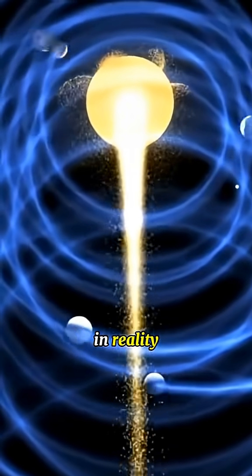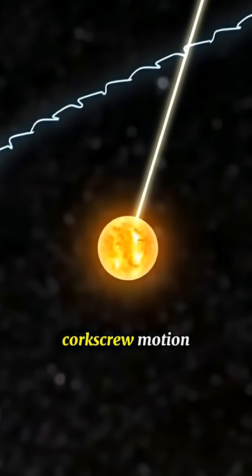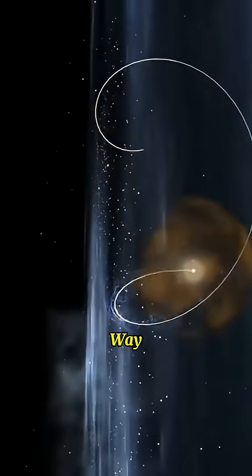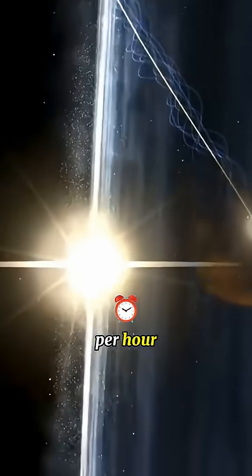In reality we're spiraling through space in a corkscrew motion, dragged along by the Sun as it hurdles through the Milky Way at 828 thousand kilometers per hour.